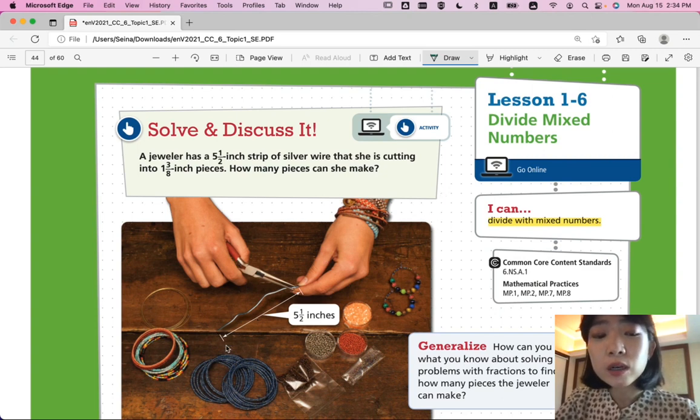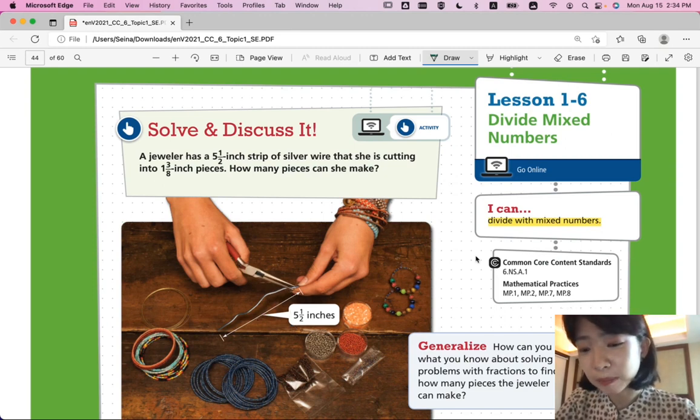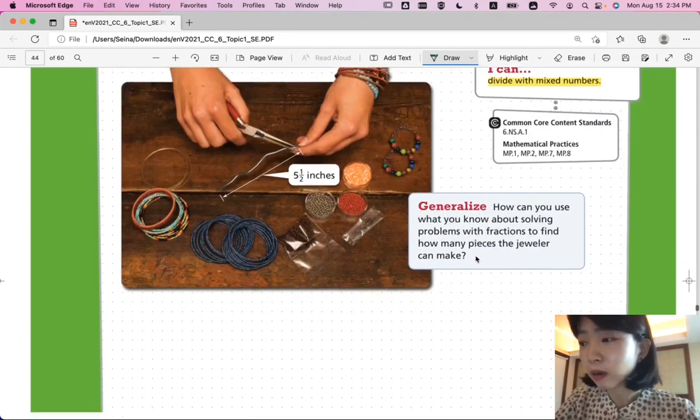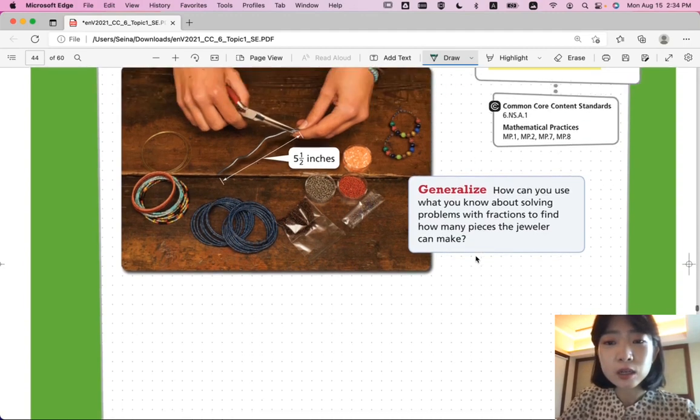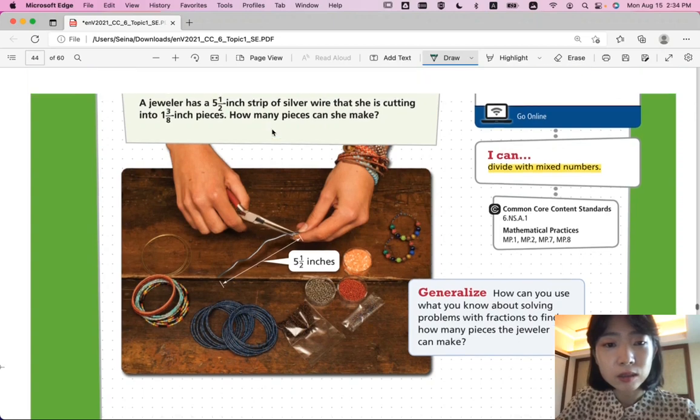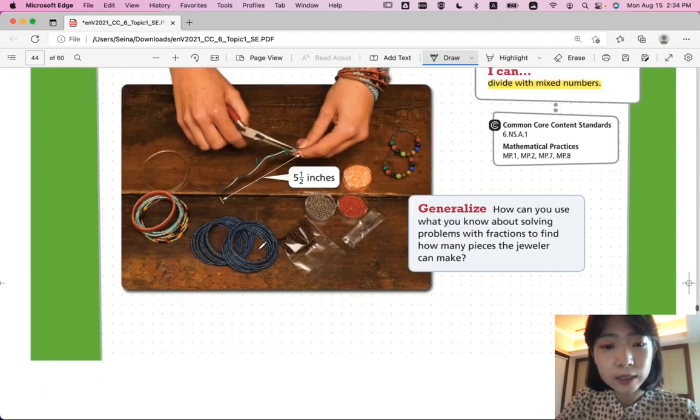In order to know how many pieces she can make, what do we do? This whole wire is 5.5 inches, and she needs 1 3⁄8-inch pieces each. So we're going to divide 5 1⁄2 into 1 3⁄8 and see how many she can make. You can use diagrams, or you can use numerical values. So, numerically, what do you do?